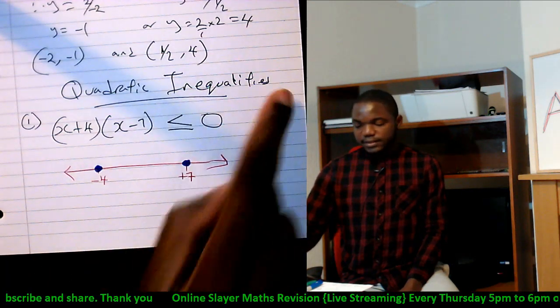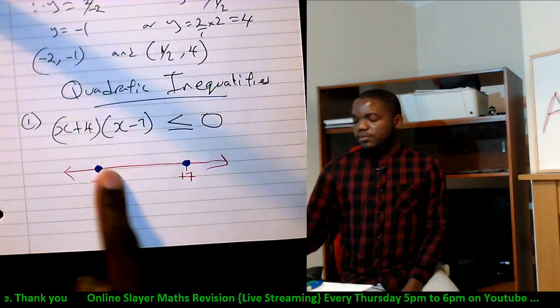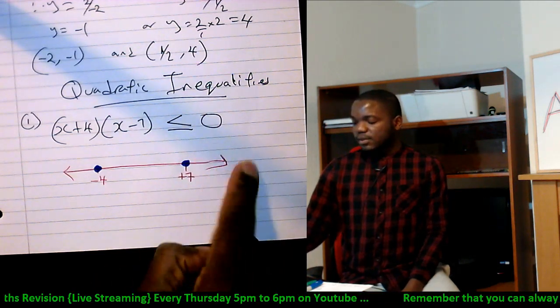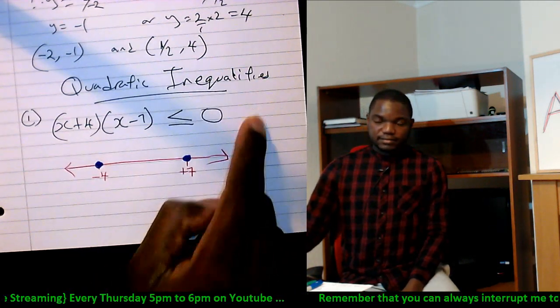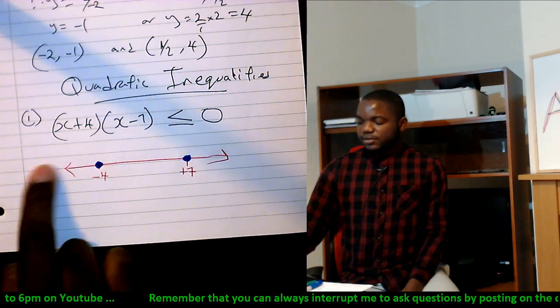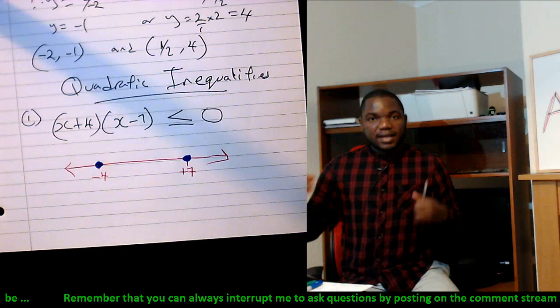So we are just going to do three things. We're going to test a number that falls around here and see if it agrees with the inequality. We're going to test a number around here and see if it agrees. And we're going to test a number around here to see if it agrees. If any of them agree, it means that the entire region where that number falls in is included.